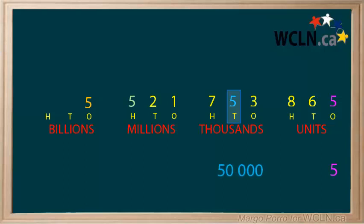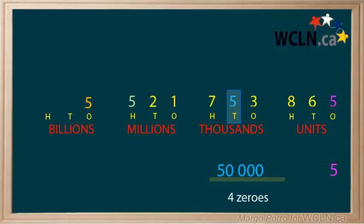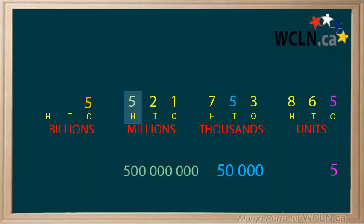Count the number of places to the right of it: one, two, three, four. That tells us how many zeros to add after the five when giving its value. This five is in the hundred millions place. Its value is five hundred million. There are eight places to the right of it.